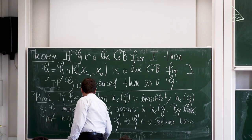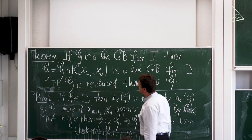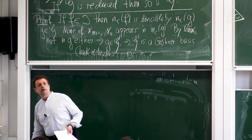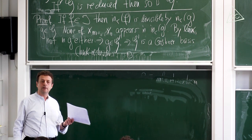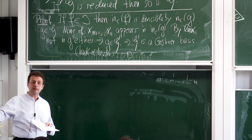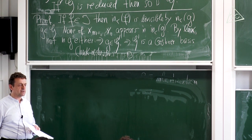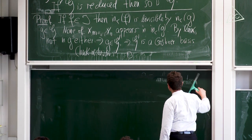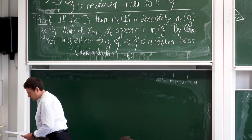G′ inherits reducedness from G. Now, you can use lexicographic Gröbner bases to solve polynomial equations by elimination. This is often not the best method — often rather slow — but if it works, it works. It's the first thing you try when somebody gives you a system of polynomials.